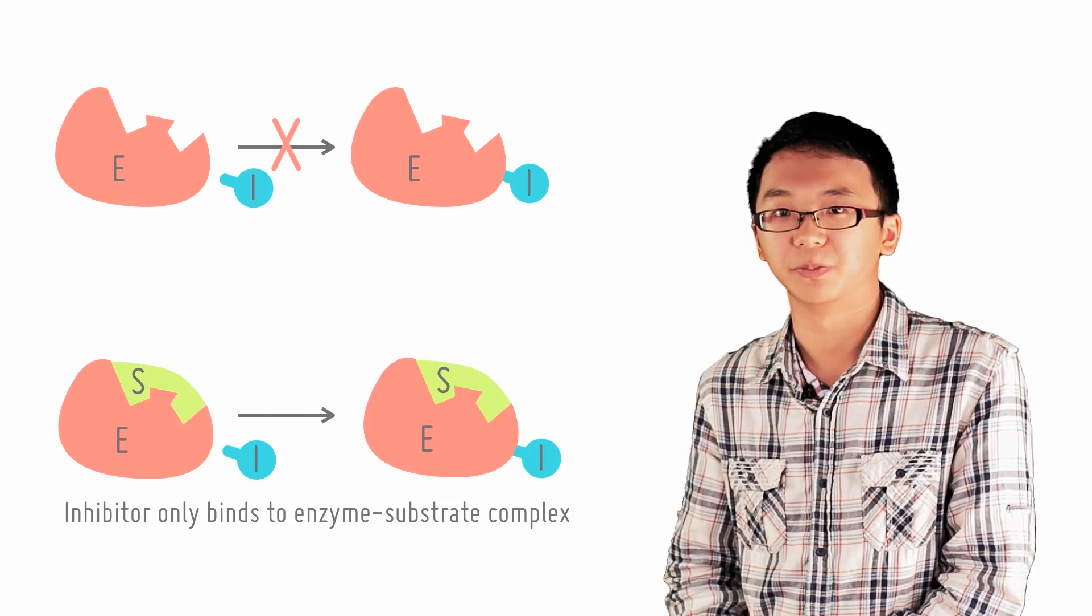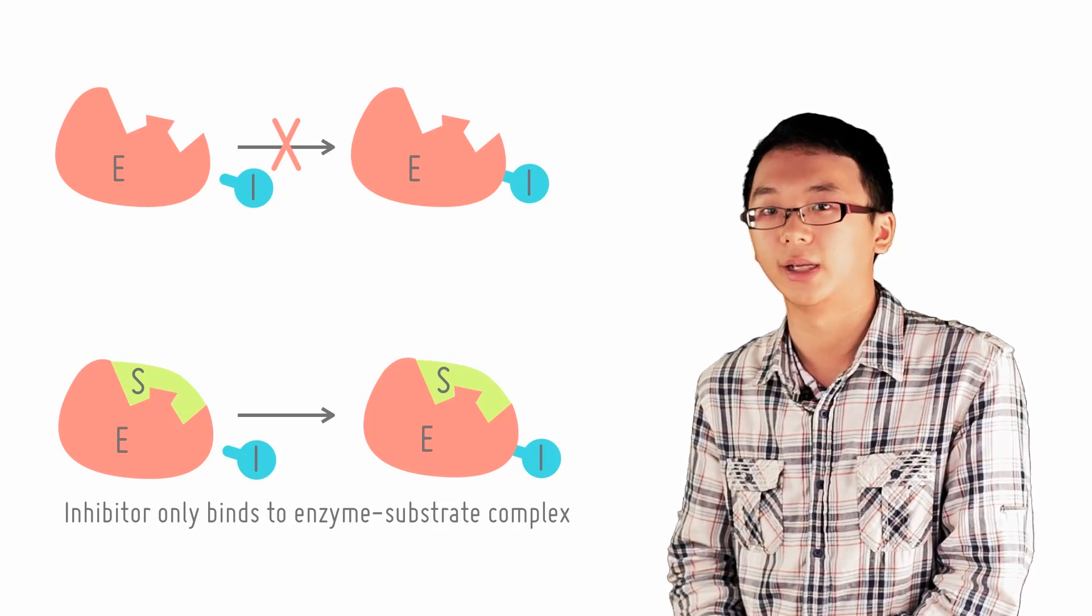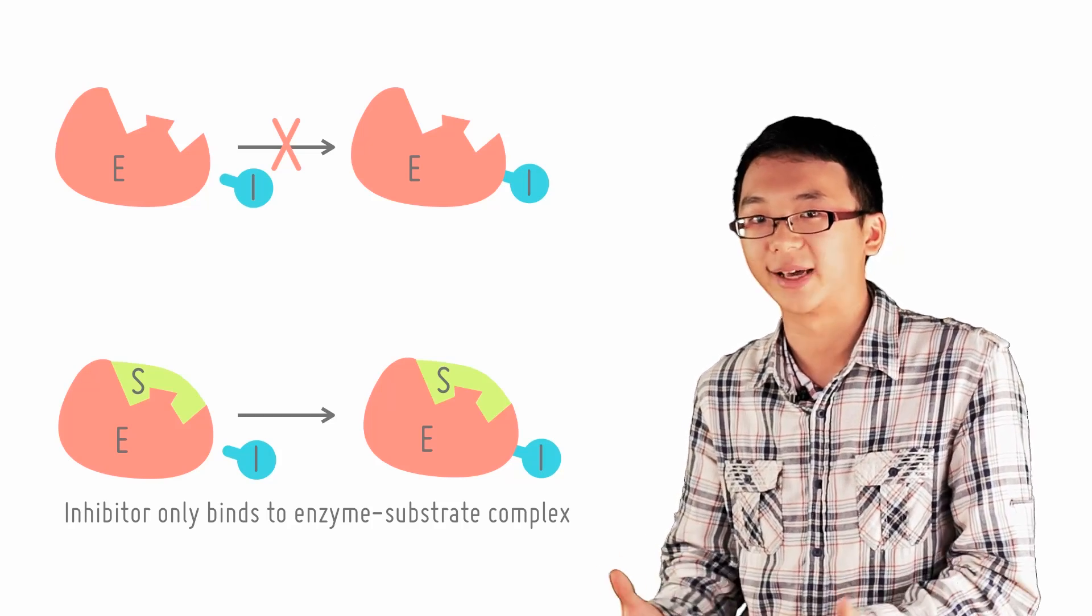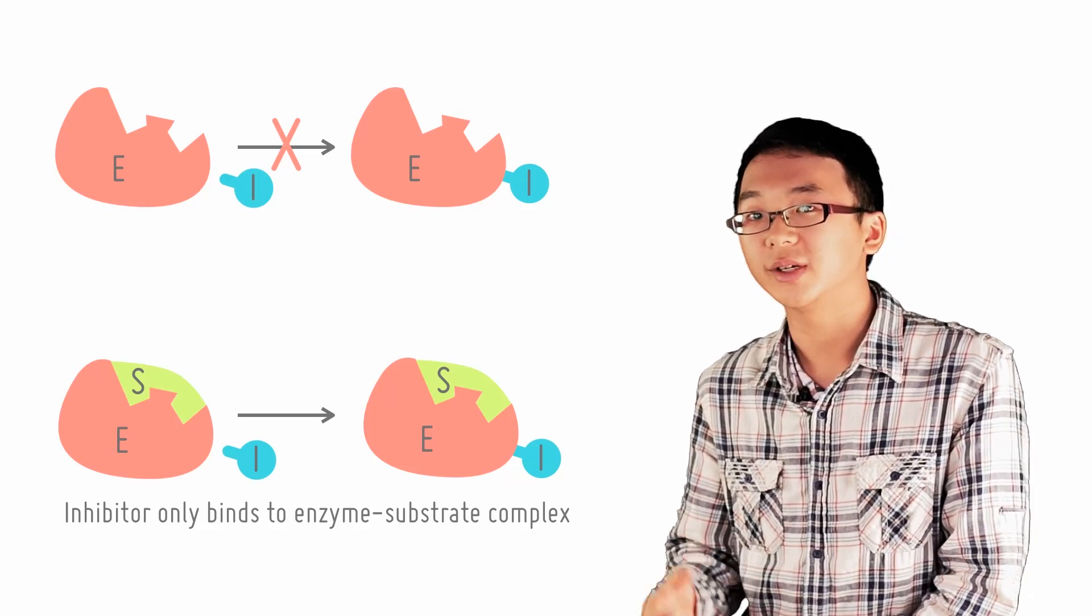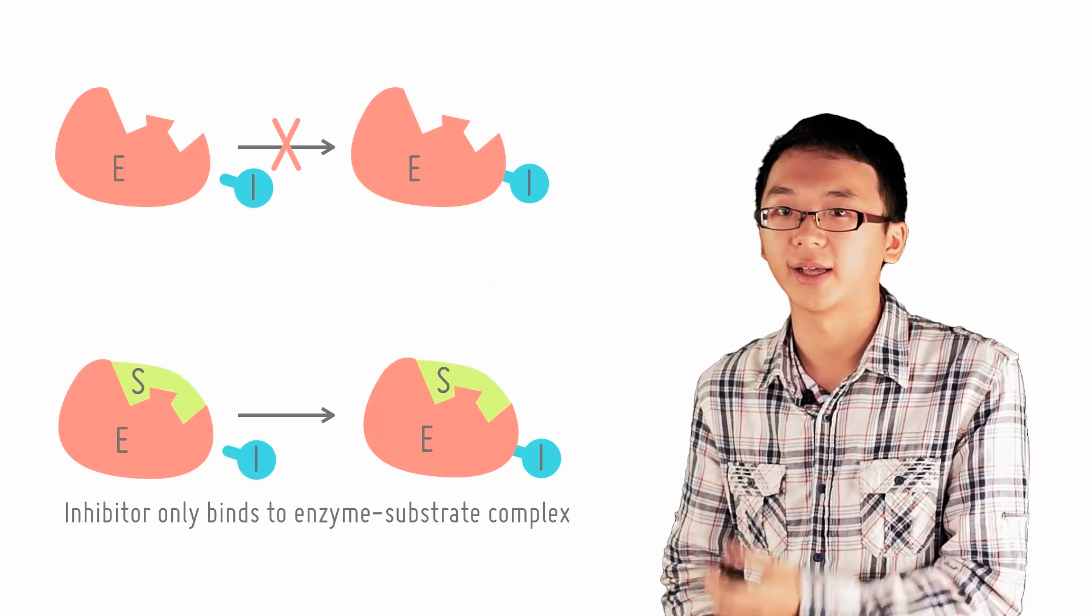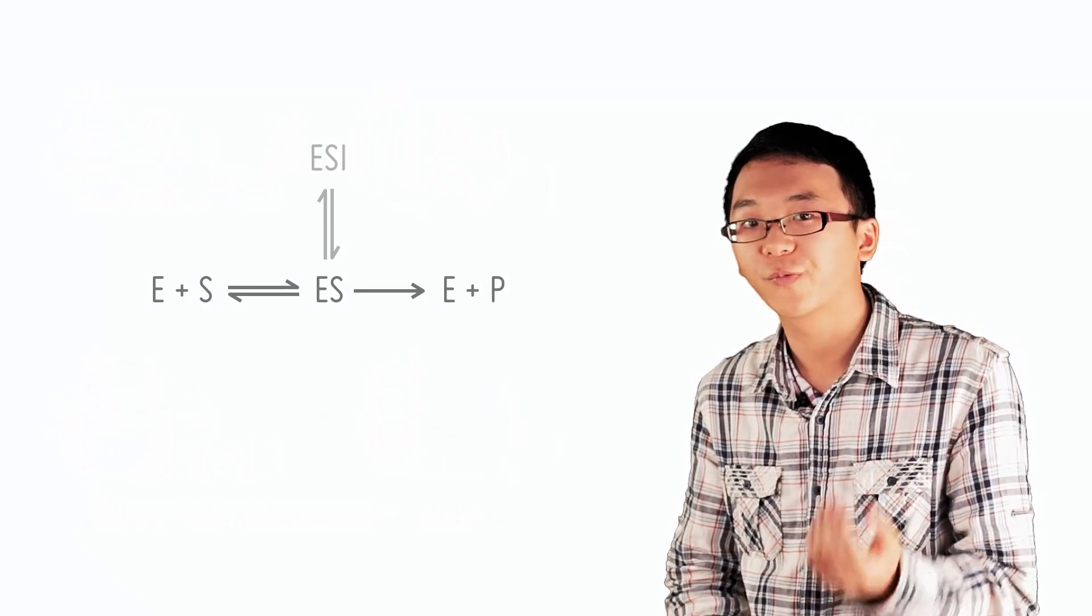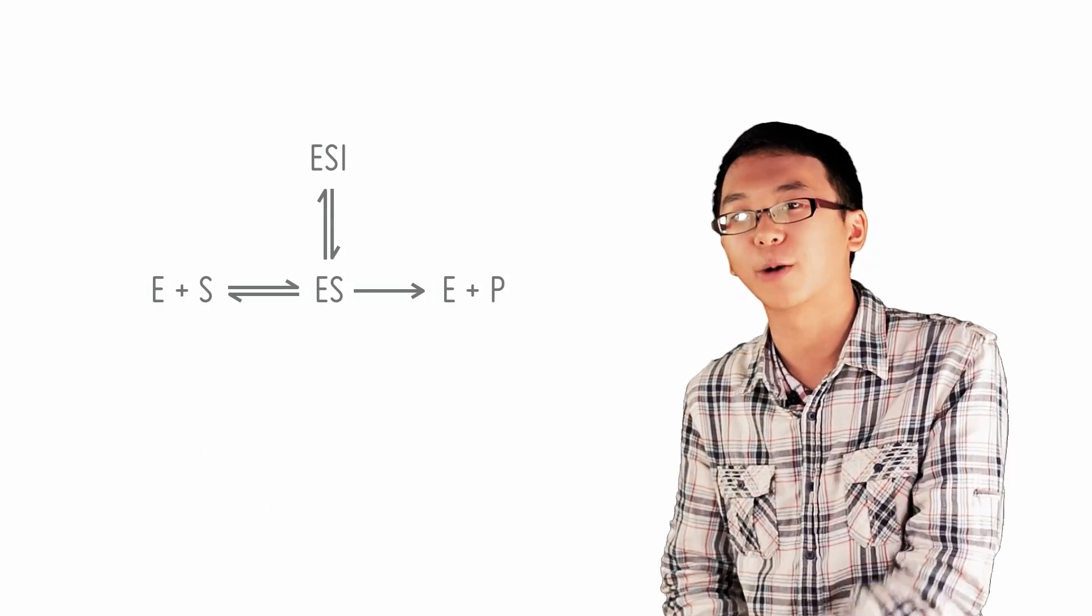This poses an interesting situation because given this preference by the inhibitor for the enzyme-substrate complex over the enzyme, what we see is a relative loss of enzyme-substrate complexes to form enzyme-substrate-inhibitor complexes.